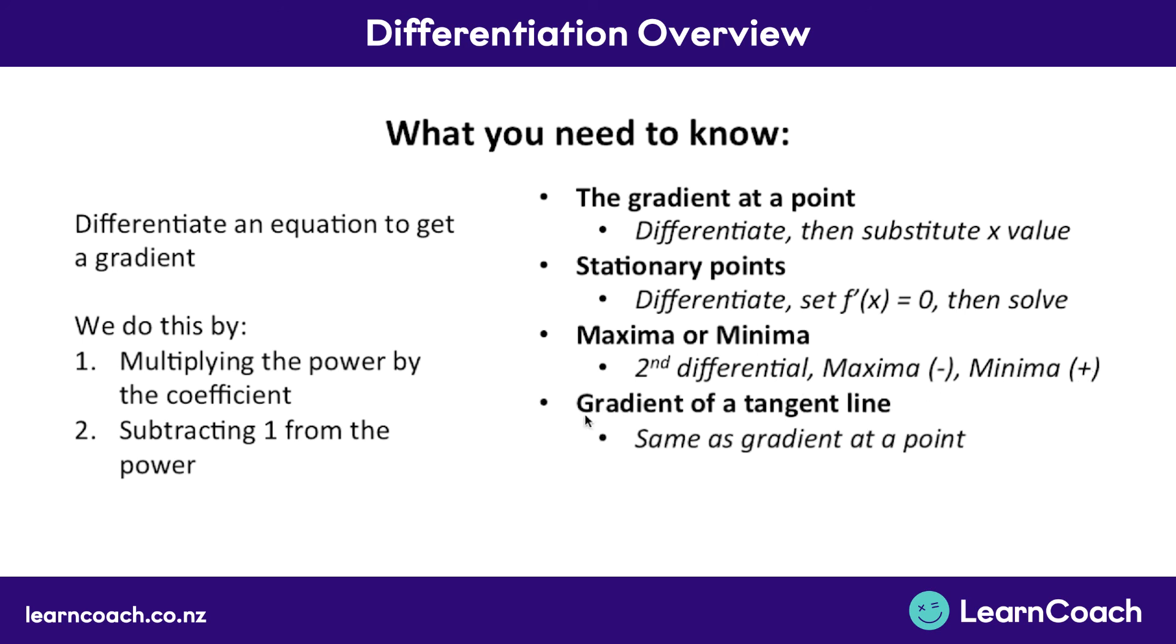Remember, finding a gradient of a tangent line is exactly the same as finding the gradient at a point. But you do need to remember the definition of a tangent line. And finally, we looked at the gradient of a normal line. This is the negative reciprocal of a tangent's gradient. So that's negative one over the gradient of your tangent. That's everything you need to know for differentiation from last year. In the next videos, we'll cover new skills.